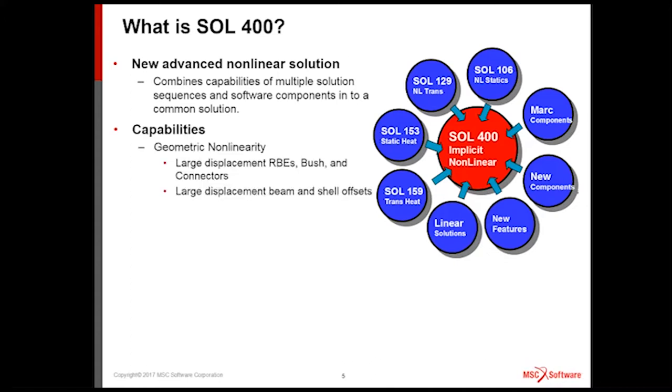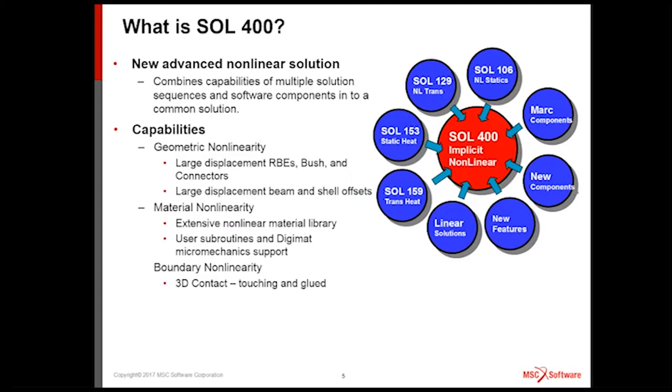Very quickly then, Solution 400 in terms of geometry nonlinear supports everything: large displacement, rigid body elements, push elements and your connectors, CFAS, CWELT - they all rotate with large displacement. We also support beam and shell offsets, which are very important in kind of outline modeling. They also support geometric nonlinearity. Material-wise, very large material library, and they support user's material subroutines and digital micromechanics support.